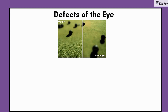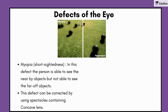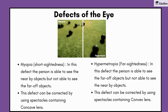Let's talk about the defects that can happen in our eyes. The first one is myopia, or short-sightedness. In this defect, the person is able to see nearby objects but not far-off objects. This defect can be corrected by using spectacles containing concave lenses. The second one is hypermetropia, or far-sightedness. In this defect, the person can see far-off objects but not nearby objects, and it can be corrected by using spectacles containing convex lenses.